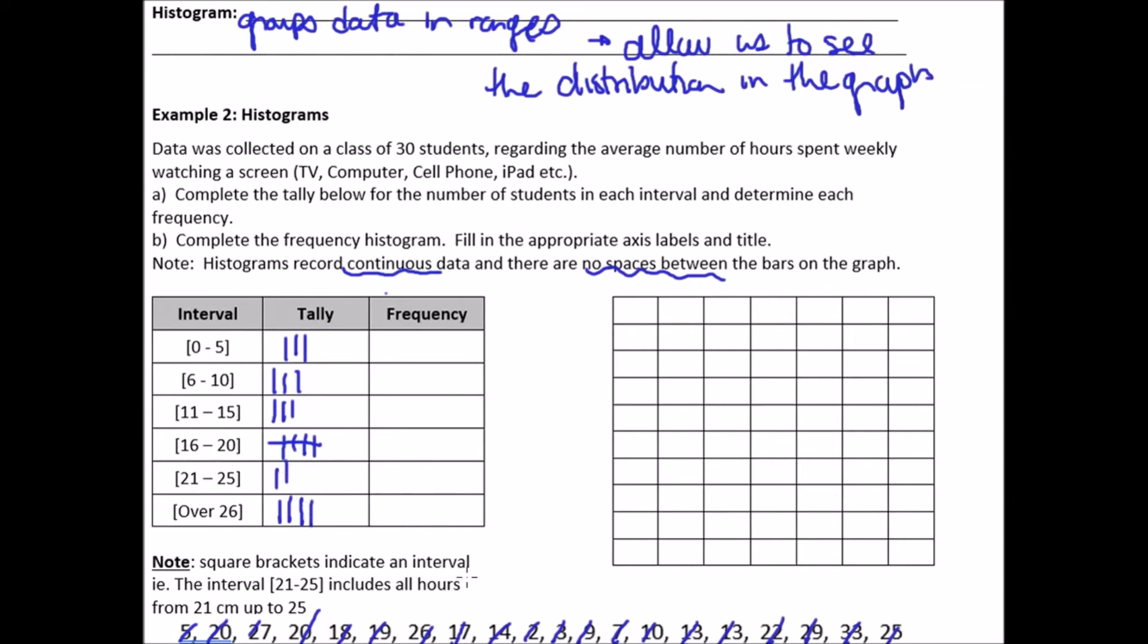Oh, 14, two, three, nine, 14, two, three, nine, seven, 10, 13, 13, seven, 10, 13, 13, 22, 29, 22, 29, and then 33, 25, 33, 25. Okay. So I just want to make a note, see the squared brackets? That means that it includes that number.